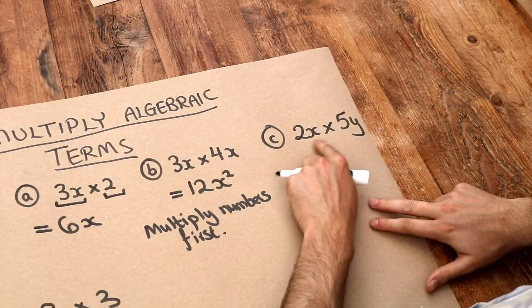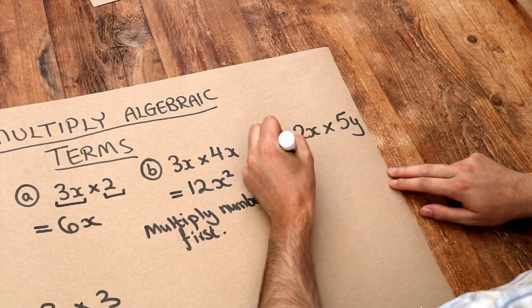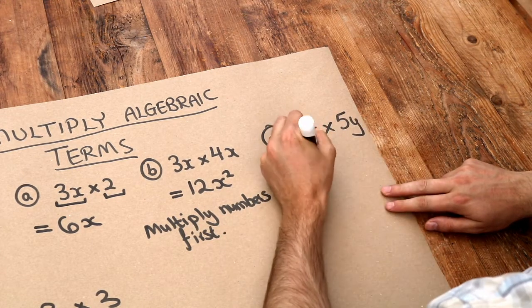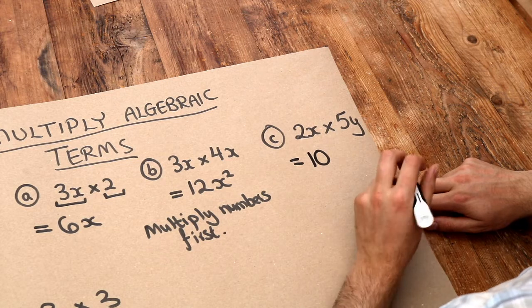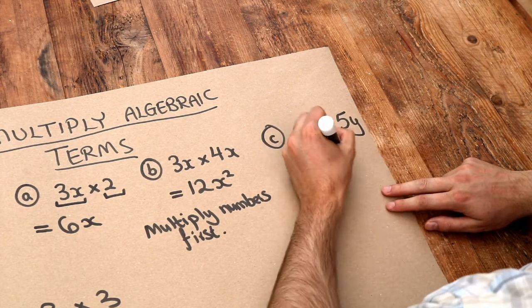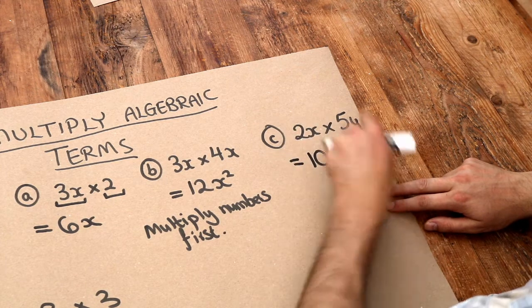This last one here, we've got 2x times 5y. Again, we multiply the numbers first. So 2 times 5 is 10. And then we've only got this single x here. We're not multiplying it by any other x here. So that just stays as x. And then we've also got this y.